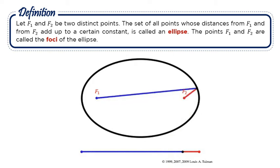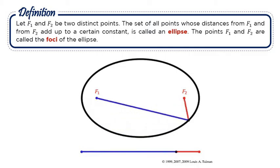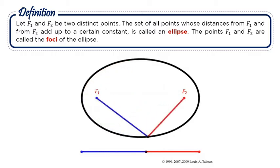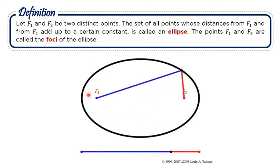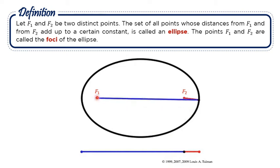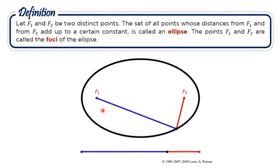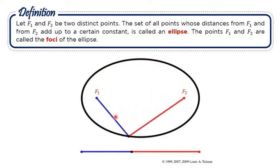The points F sub 1 and F sub 2 are the foci of the ellipse. As we can see in the illustration, this is how the ellipse is formed using these two distinct points F sub 1 and F sub 2. F sub 1 and F sub 2 are the foci of the ellipse — dalawang focus siya. We can also see here the two lines: the blue and the red lines. The blue represents the distance of any point on the ellipse from F sub 1, while the red represents the distance of any point from F sub 2.